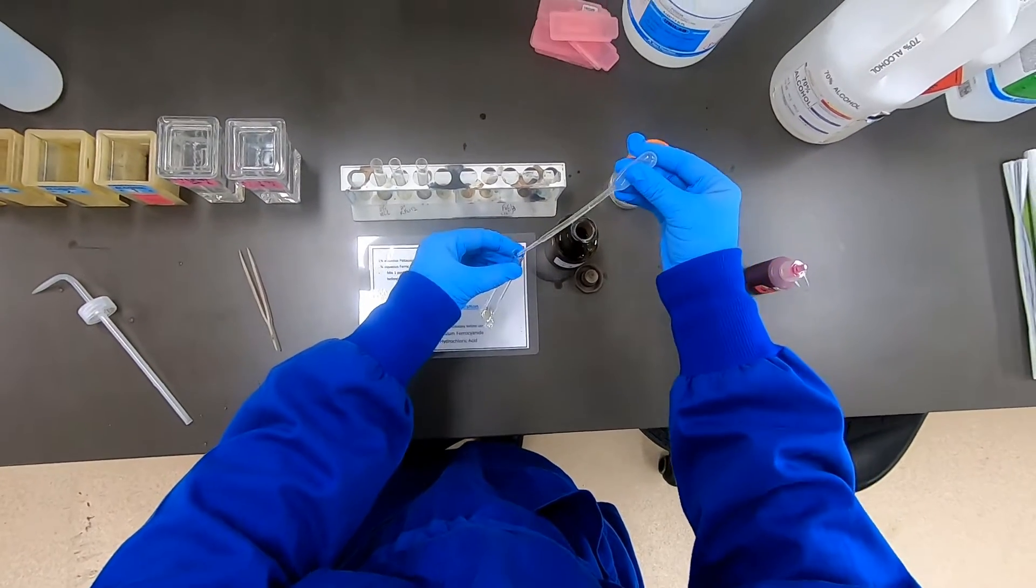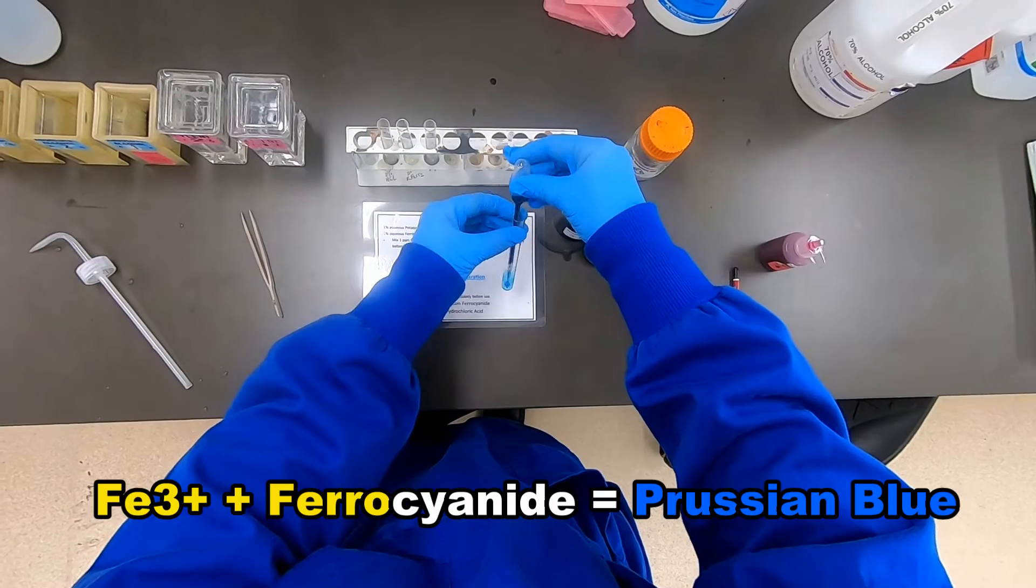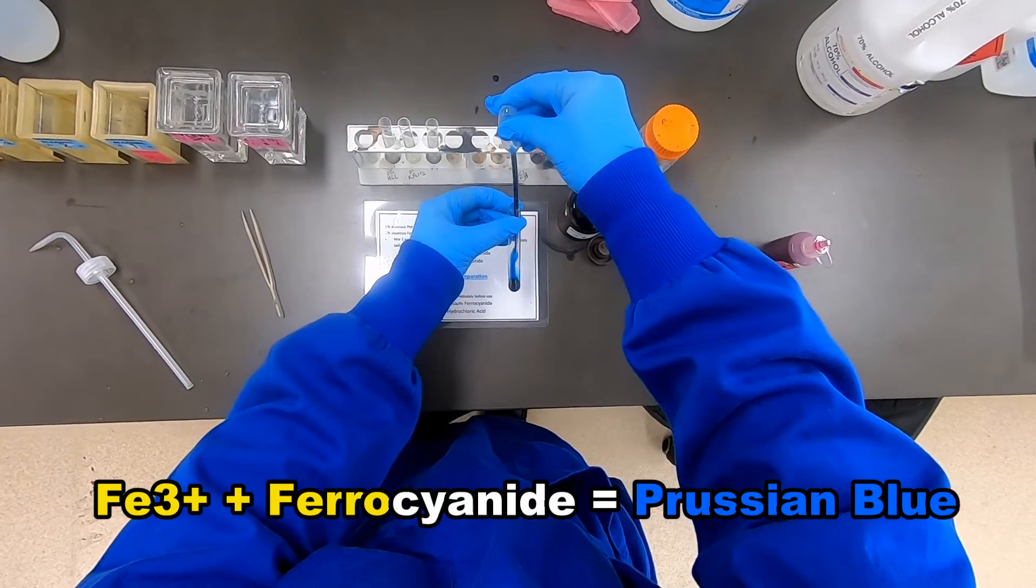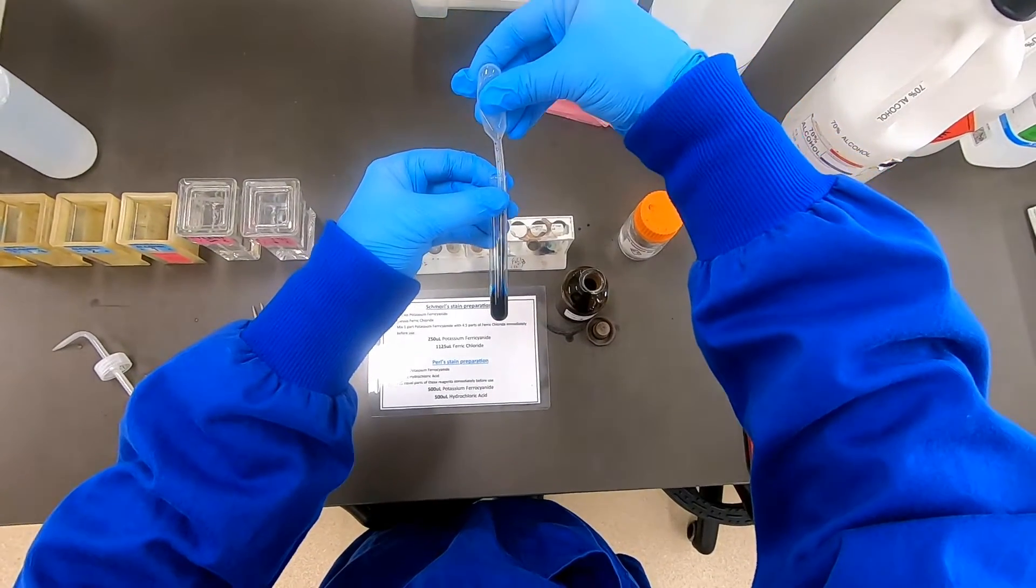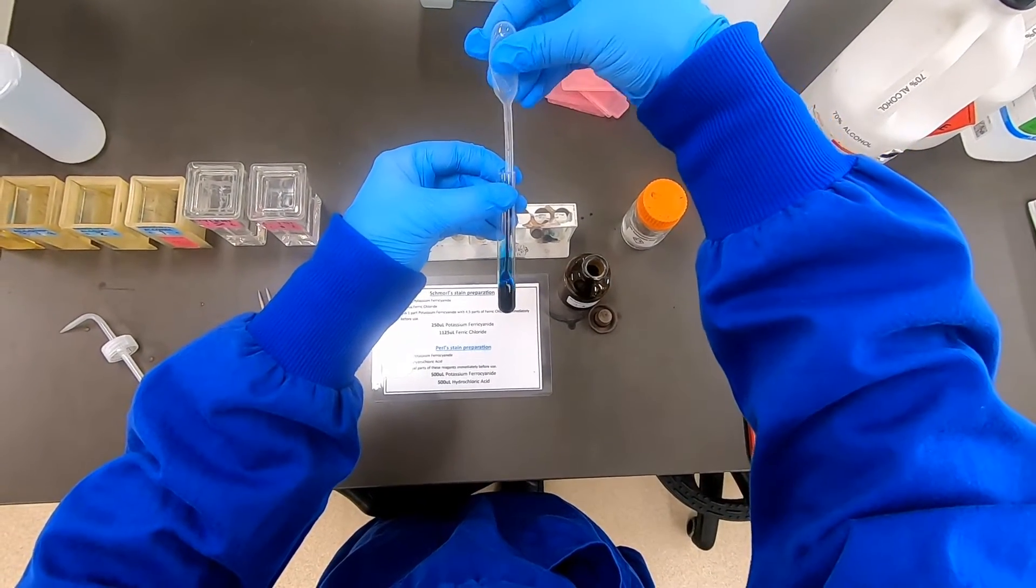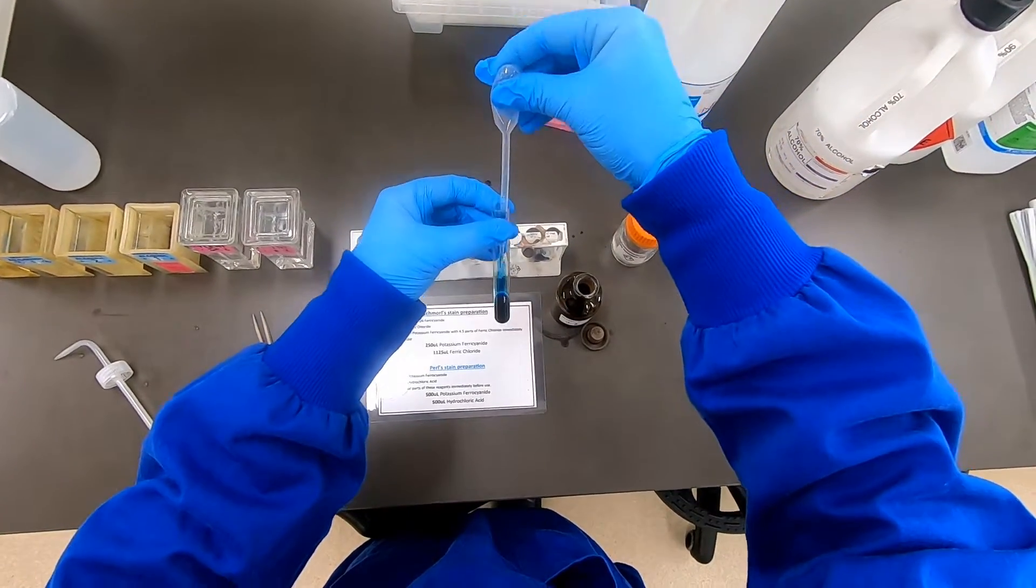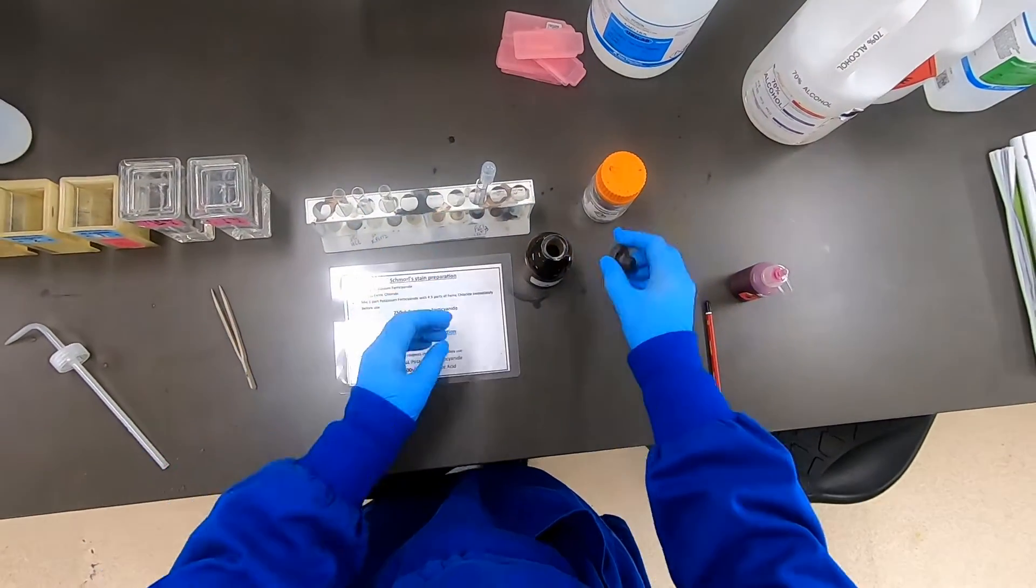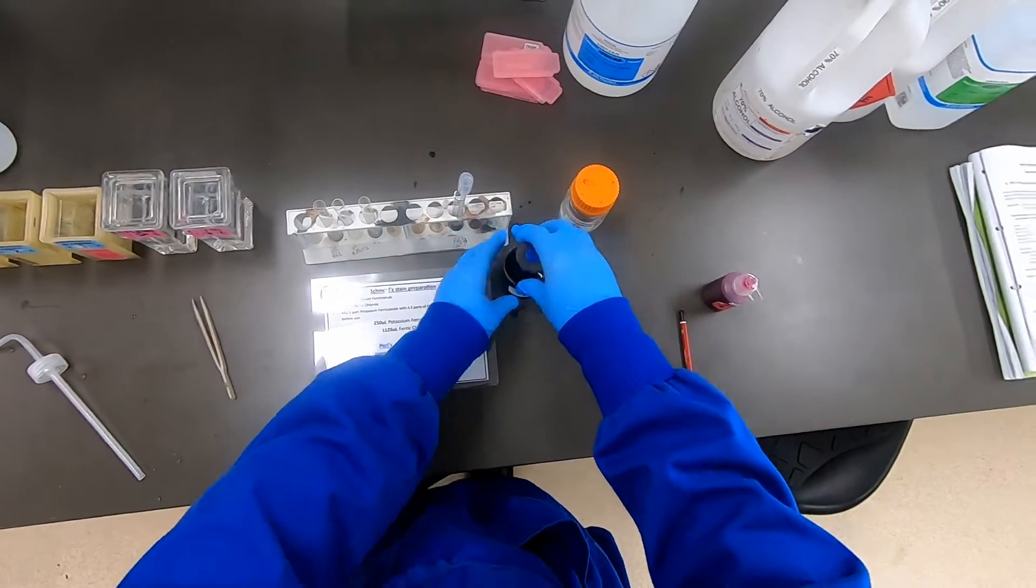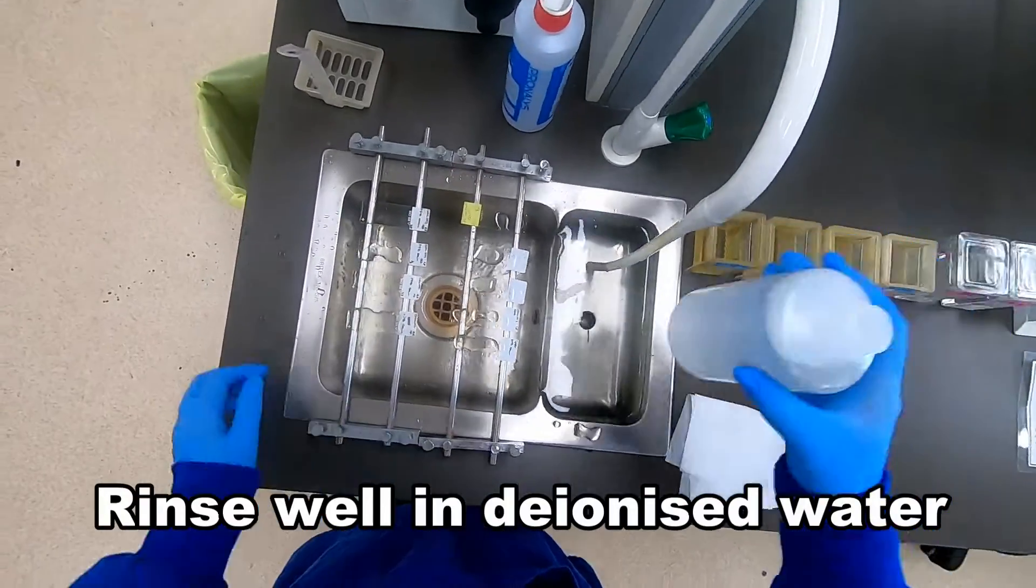See there it's quite yellow ferric chloride. But when we add the potassium ferrocyanide, we effectively produce that ferric ferrocyanide or Pearl's prussian blue. That's the color change we should see on the slide wherever there are Fe3+ ions, which are incorporated into the tissue in structures like hemosiderin.